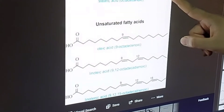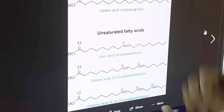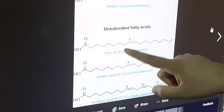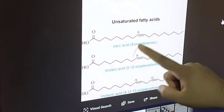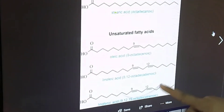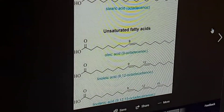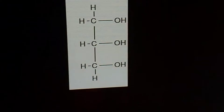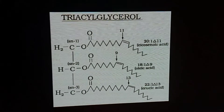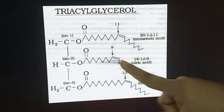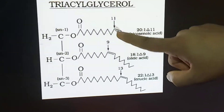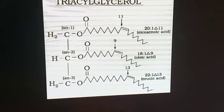This fatty acid has no double bond in its structure. Considering this, fatty acids can be classified as saturated fatty acids — which have no double bonds — and unsaturated fatty acids — which have double bonds. Unsaturated fatty acids can be mono-unsaturated, di-unsaturated, or tri-unsaturated. These unsaturated fatty acids are attached with the glycerol molecule forming the triacylglycerol. When there is a double bond in a fatty acid, it causes the fatty acid to bend.